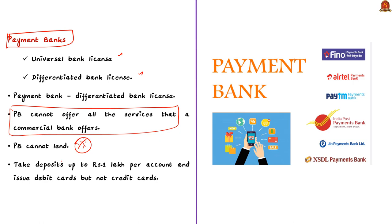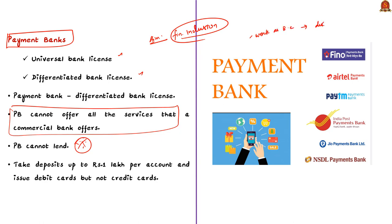The major objective of payment banks is to further financial inclusion by providing small savings accounts and payment or remittance services to migrant laborers, low-income households, small businesses, and other unorganized sectors. The payment bank can also work as a Banking Correspondent of another bank, and by doing so, they can distribute simple financial products like mutual funds, insurance products, etc.